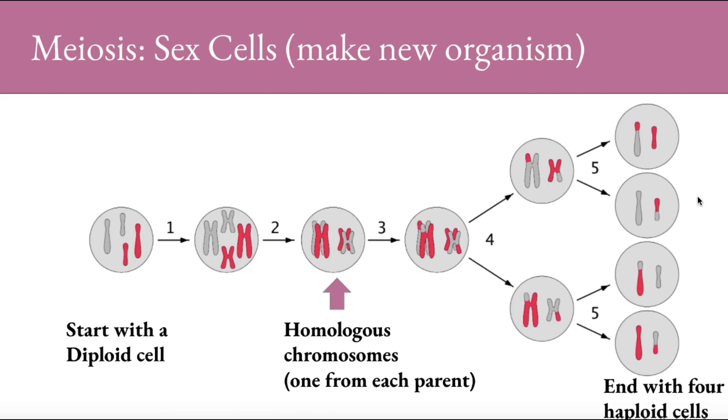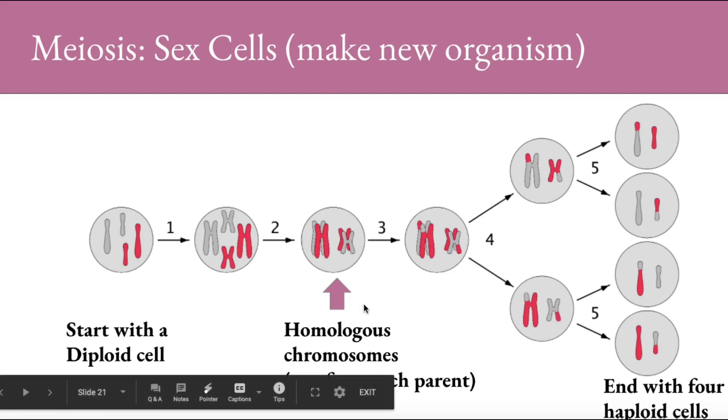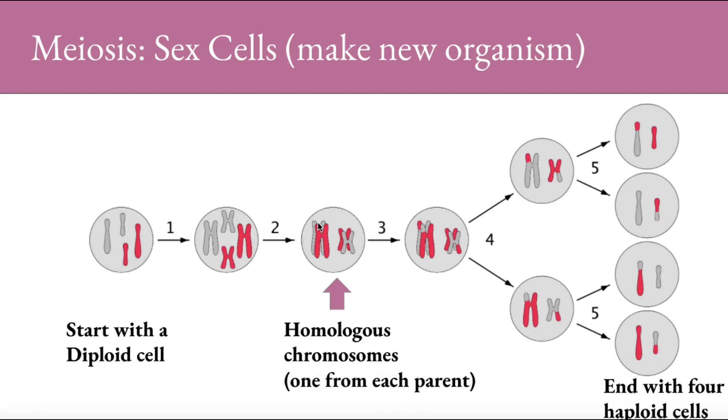So let's review meiosis, how sex cells are made to create a new organism. We start with that diploid cell. The homologous chromosomes are from each parent in the original cells, and in that first prophase, you'll see the crossing over occur. Then through a process of two divisions, you end up with four haploid cells.